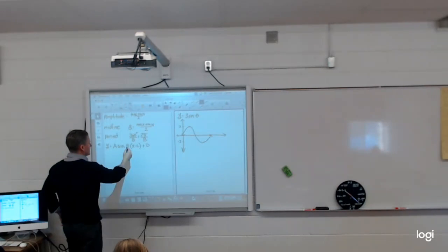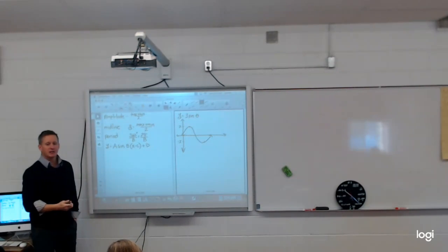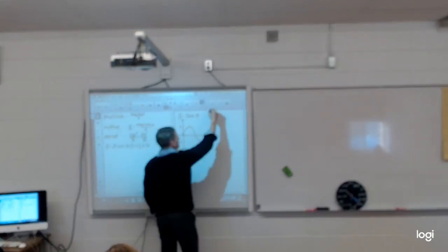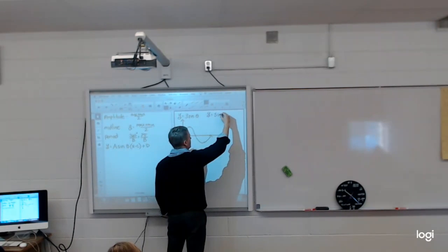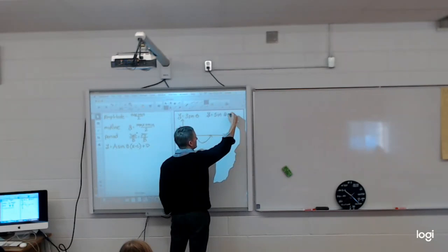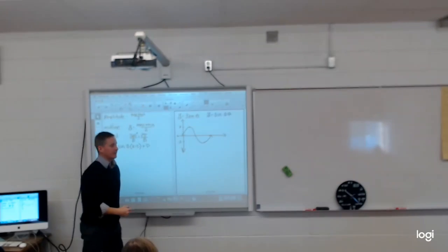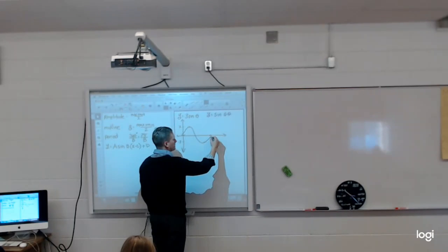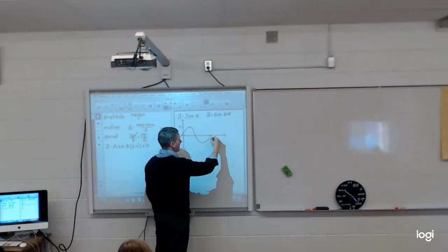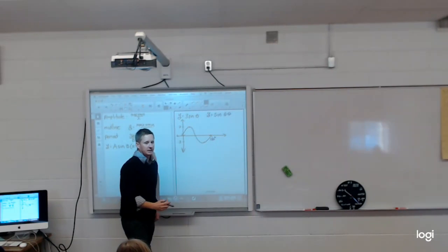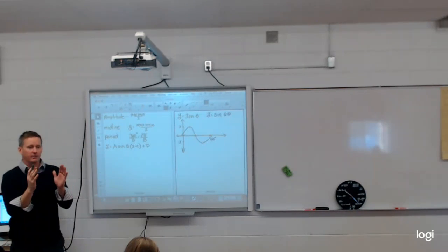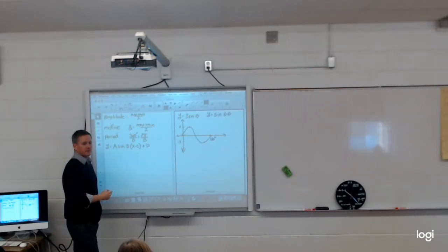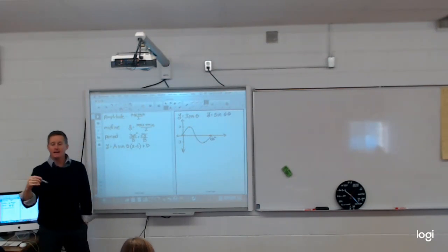B affects the graph by changing your period. So if I have y equals sine 2 theta, my B value is 2. So instead of this being 360 degrees, it becomes 180 degrees — I divide all my x values by that value. I take 360 and divide it by 2, whatever the B value is. B is just any coefficient.